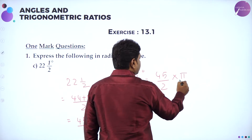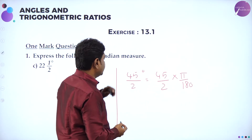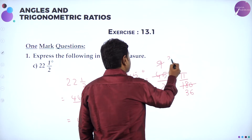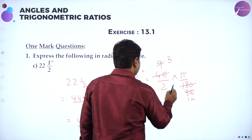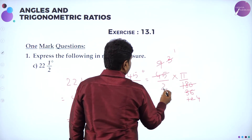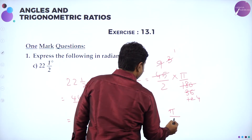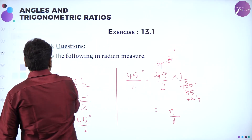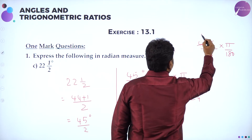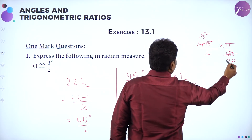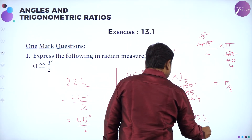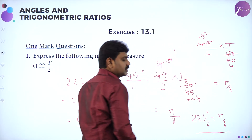Now take 45/2 degrees and multiply by pi/180. So it becomes 45/2 times pi/180. Both 45 and 180 are divisible by 9, and simplifying gives pi/8. So 22 and a half degrees equals pi/8 radians.